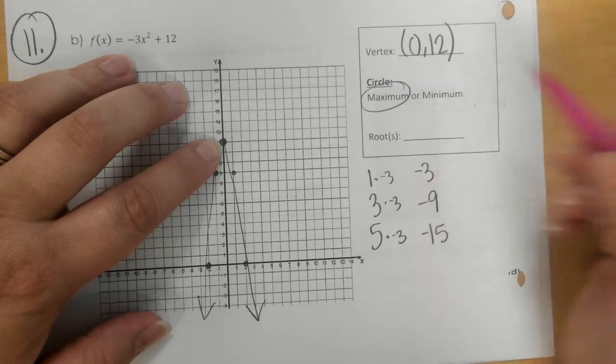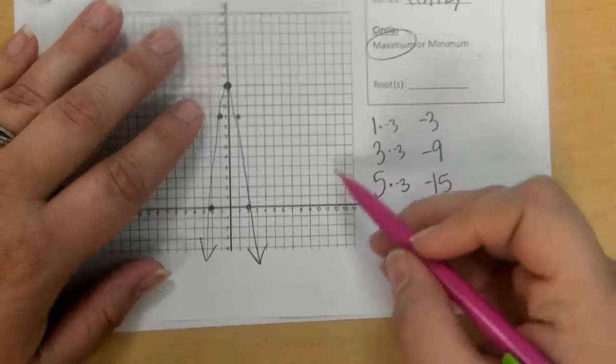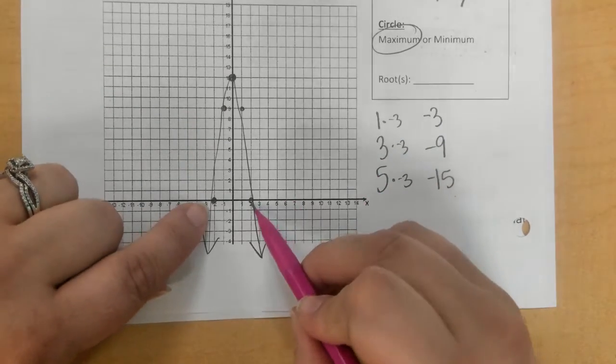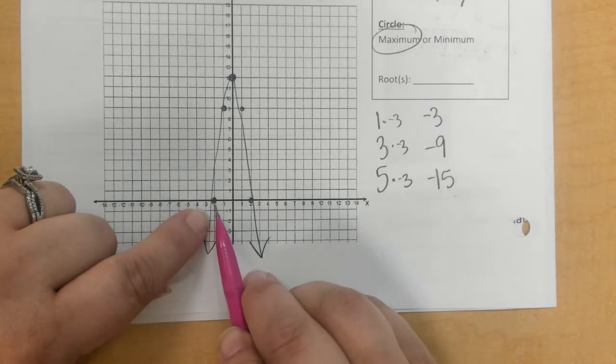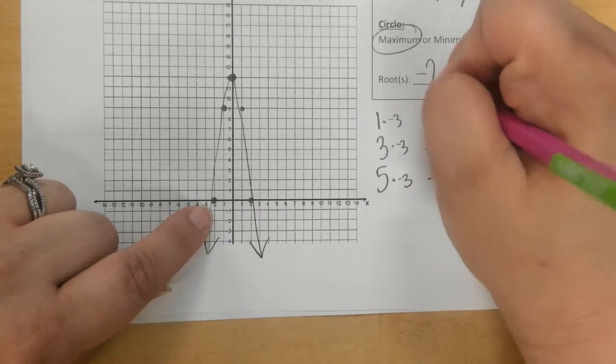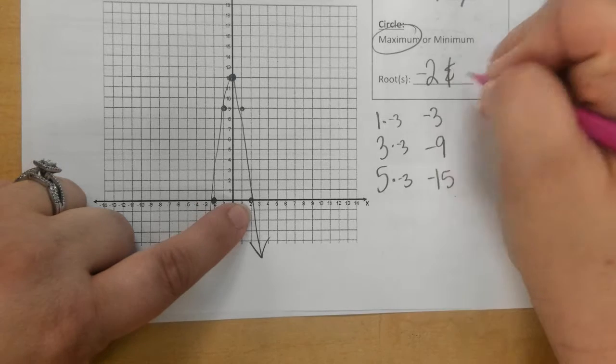And the roots are where does the parabola cross the x-axis, which we see here, it's negative 2 and 2.